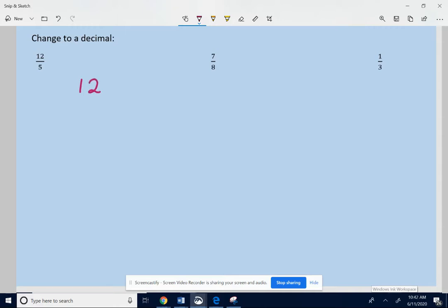So 12 over 5, 12 fifths. Change that to a decimal, take the 12 on top, divided by the 5 on the bottom. What I like to do is put a decimal point right after the number that's being divided. And I like to even put that on the fraction bar above it, so I don't get confused.